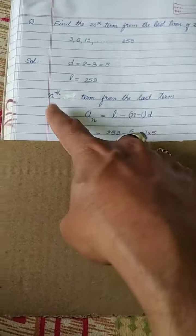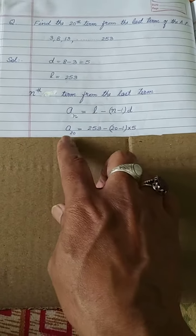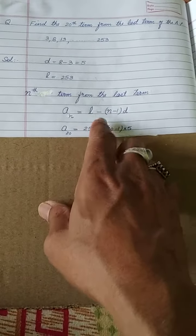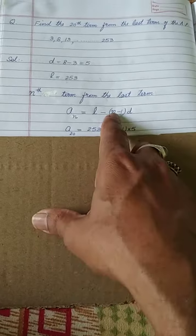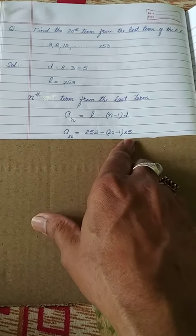So here you see, you want to find 20th term starting from the last. So A20 is equal to, according to this formula, in place of L you put this value 253, N will be replaced by 20, and D is 5.